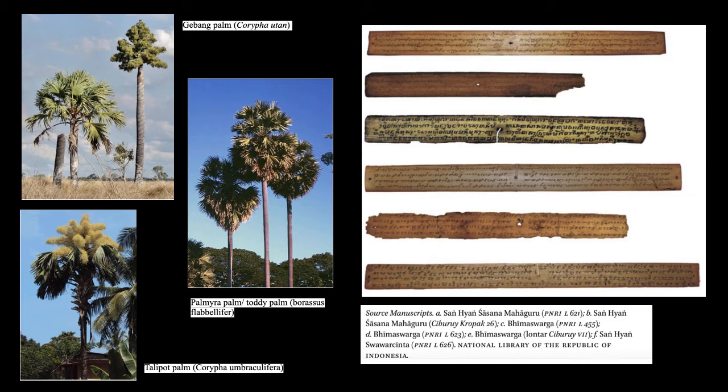Dating manuscripts is always a problematic science because not all manuscripts have colophons. When you study manuscripts, colophons are sections that tell you who the author is — though very often this is not stated — and also where the information comes from. It is almost like a publisher's comment telling you the origin of the source of the information.